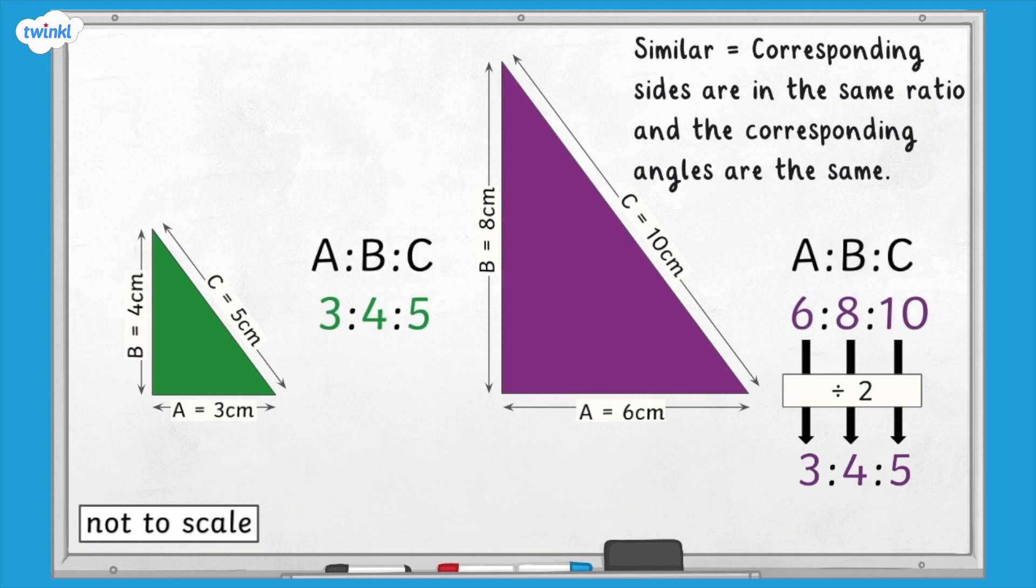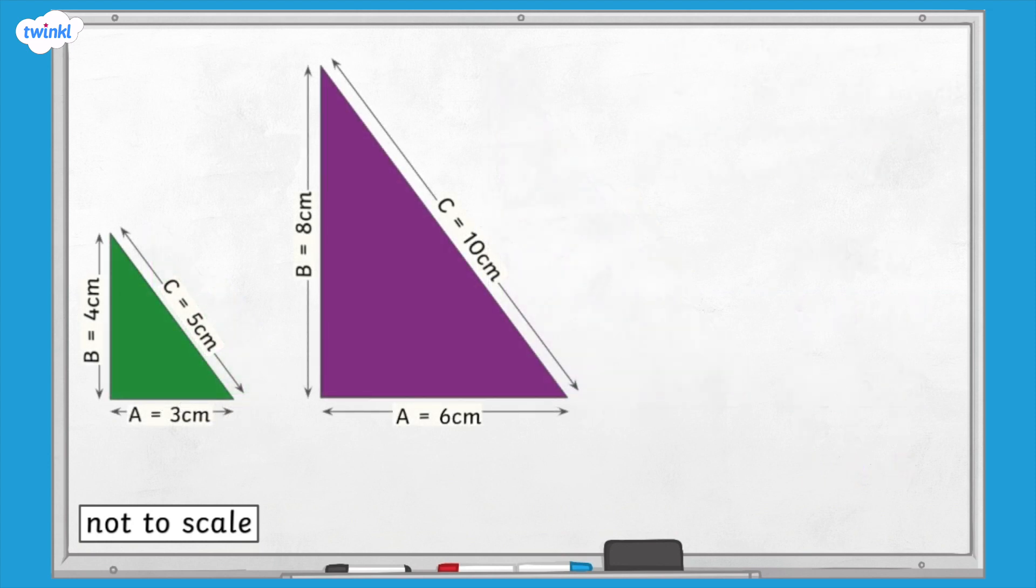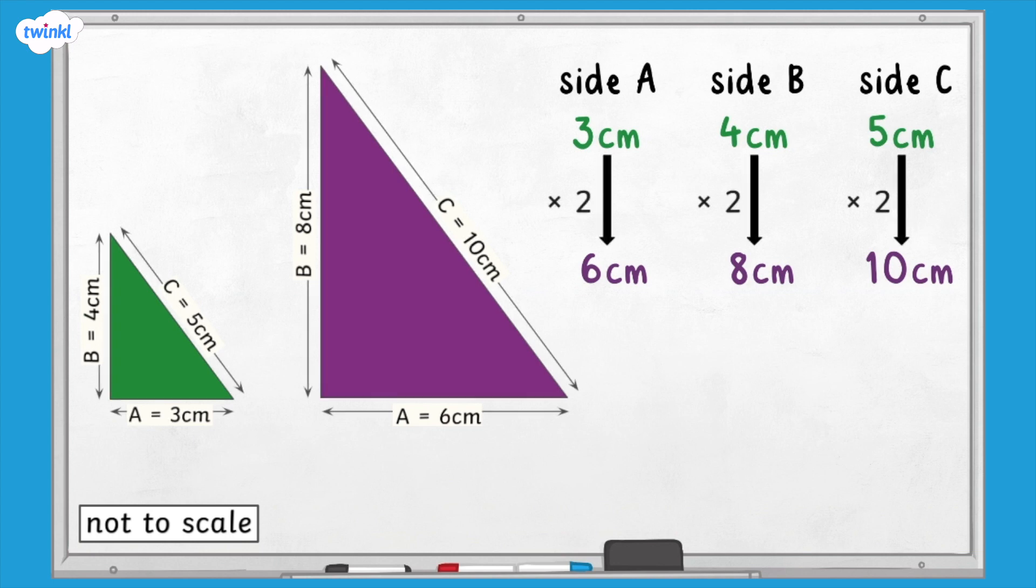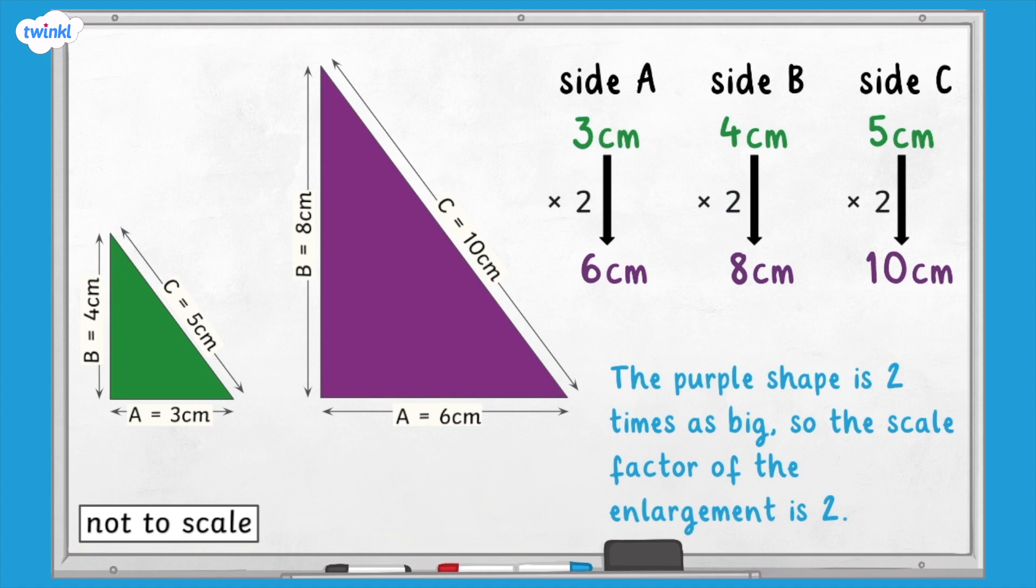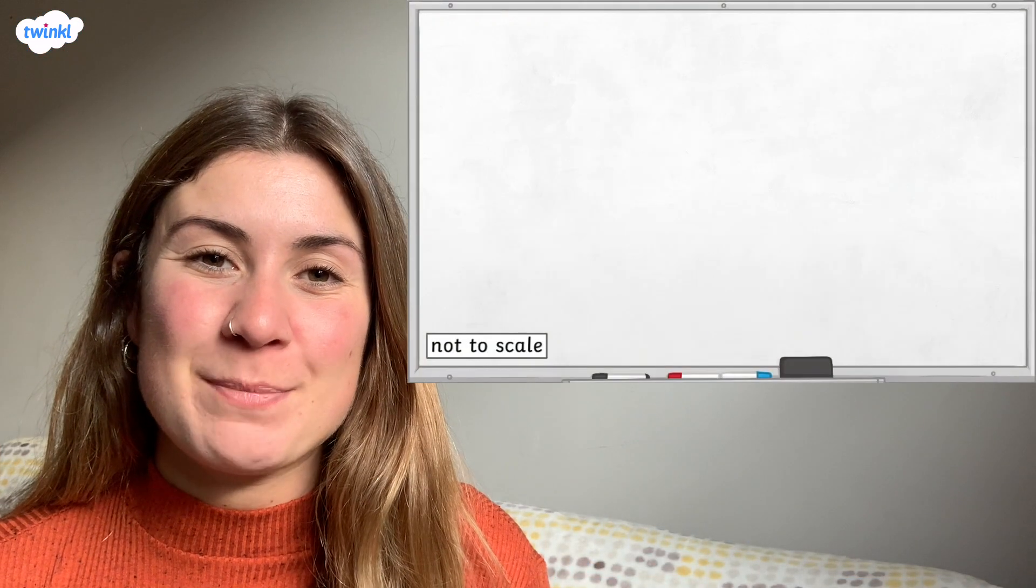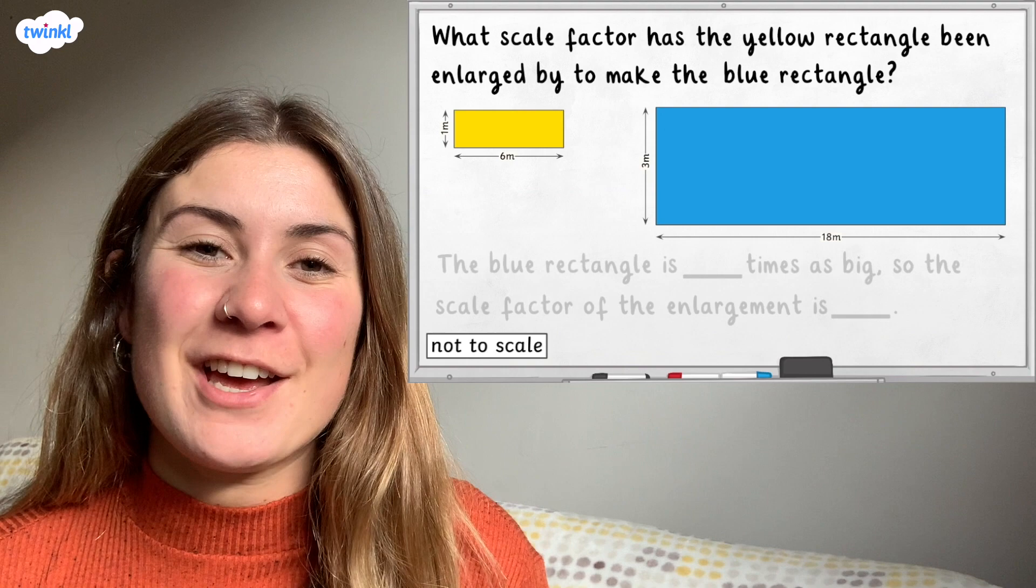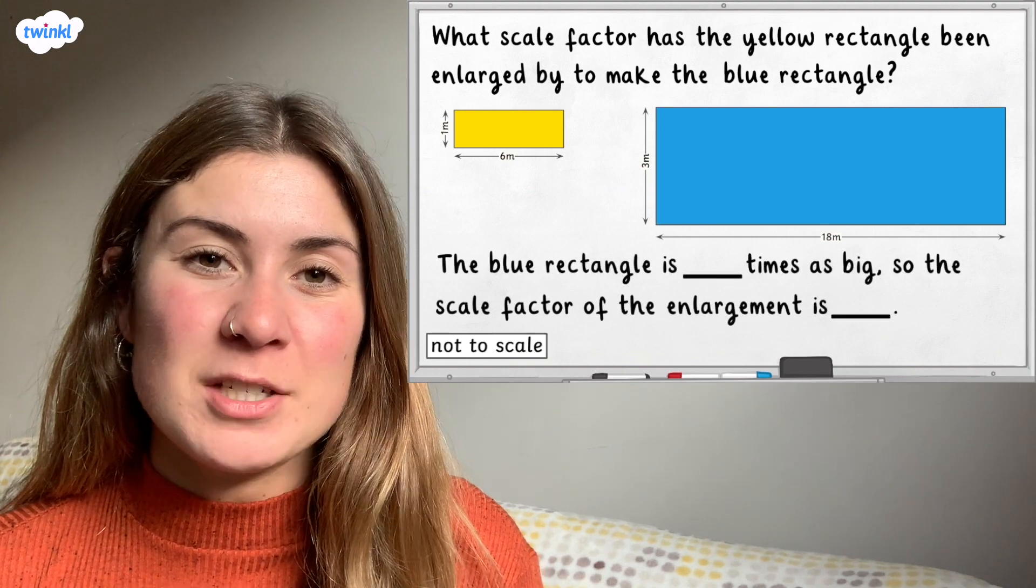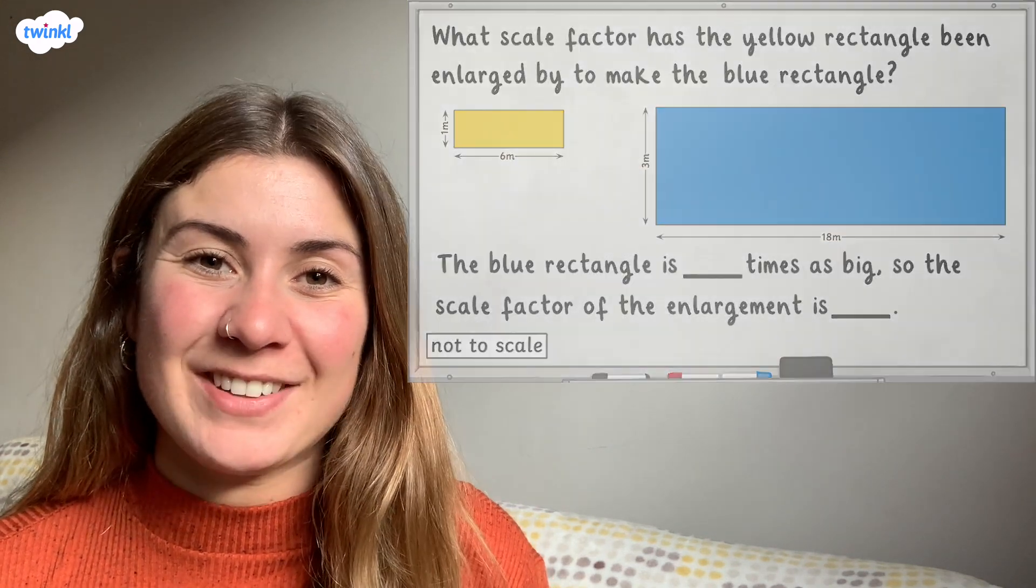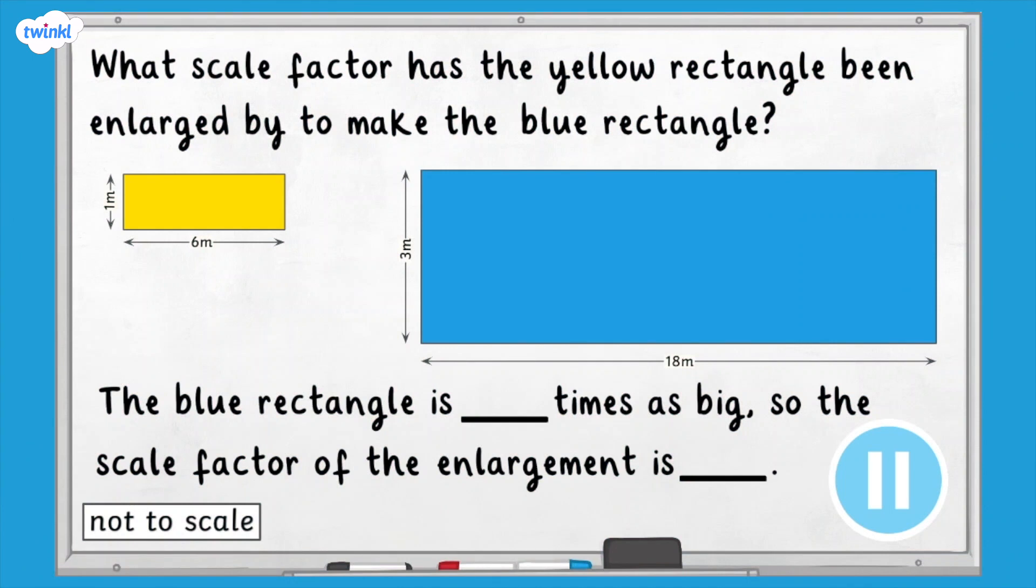The scale factor is the number we have multiplied each of the corresponding sides by to create the enlarged shape. The purple shape is two times as big, so the scale factor of enlargement is 2. The blue rectangle is 3 times as big, so the scale factor of enlargement is 3.